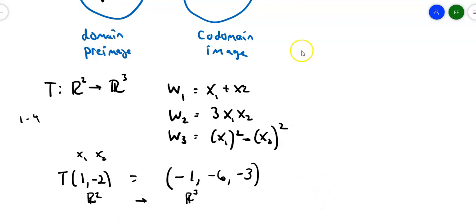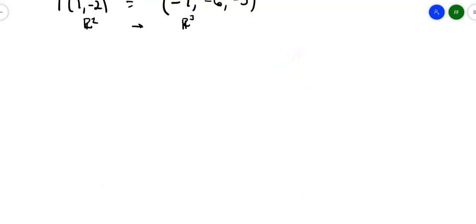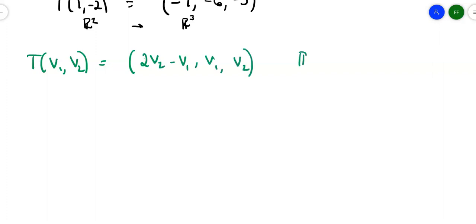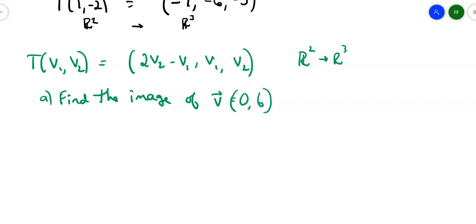If everything was linear, it would be a linear transformation, and there would be a set of rules that apply to it. Let's try another one. Suppose I want to take a transformation of (V1, V2), and the rule is (2V2 minus V1, V1, V2). Again, this is going from R2 to R3 because I'm inputting values in R2 and getting out values in R3. The first question: find the image of (0, 6). So I'm inputting (0, 6) and seeing what comes out: 2 times 6 minus 0 gives 12, then the second coordinate is V1 = 0 and the third is V2 = 6. So the answer is (12, 0, 6).